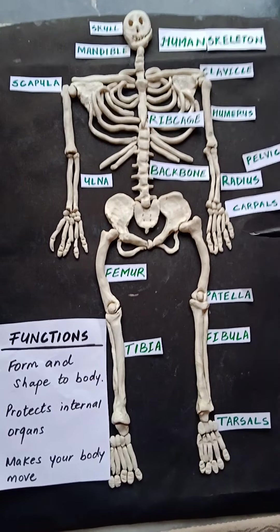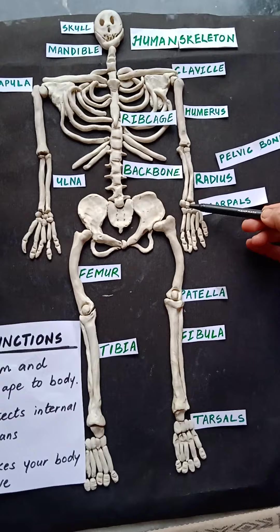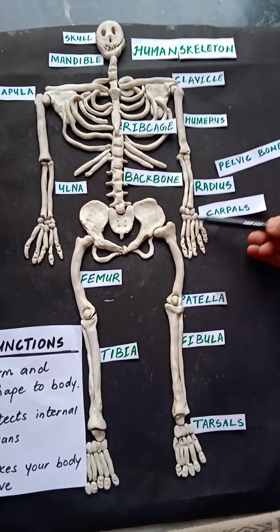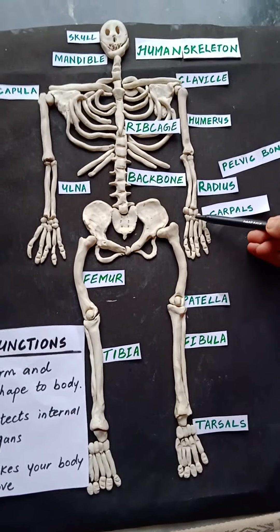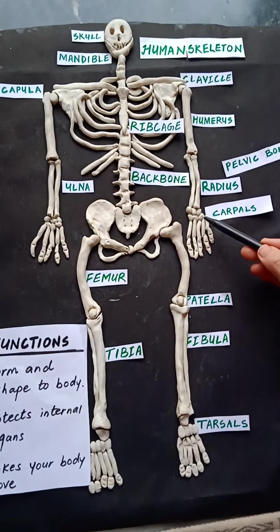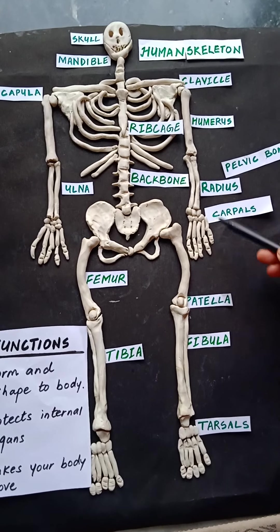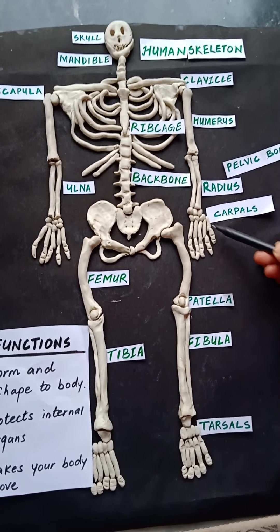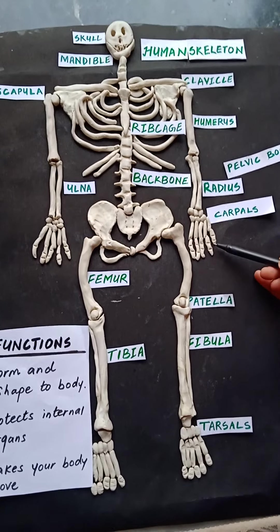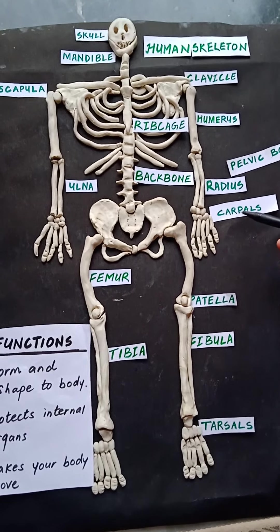Now let's move on to the hand bones. These bones are called carpals. With the help of your hands you drive a car — that's how you remember carpals. These next ones are metacarpals, and the finger bones are called phalanges.